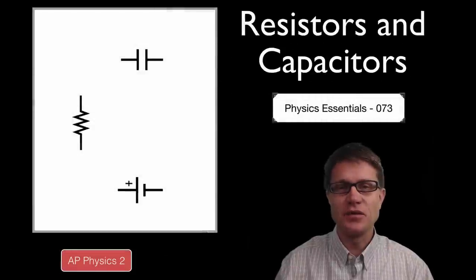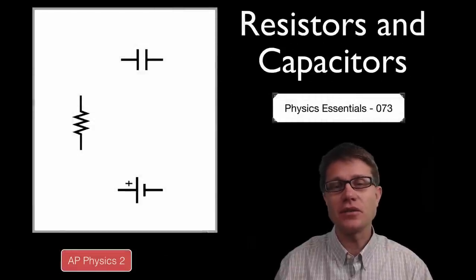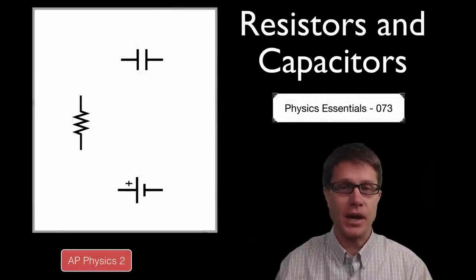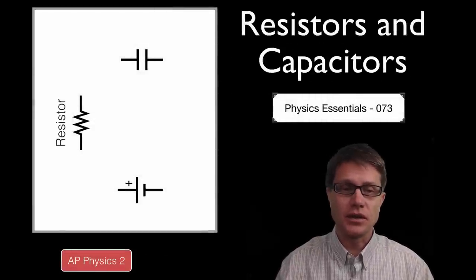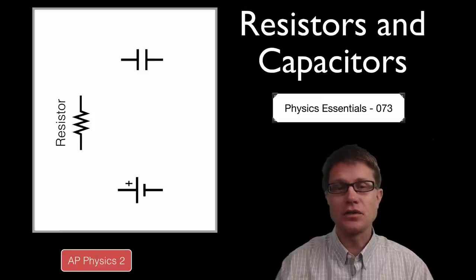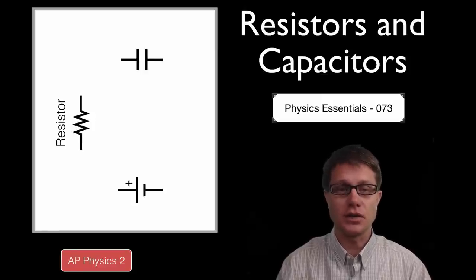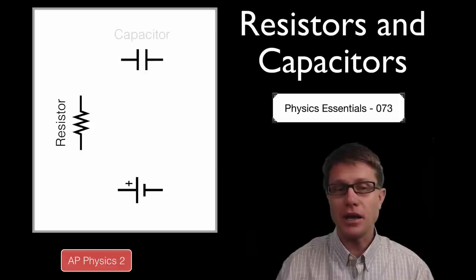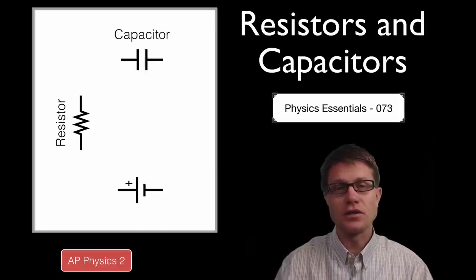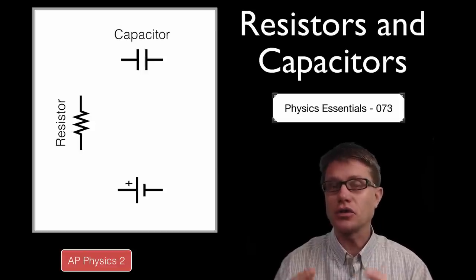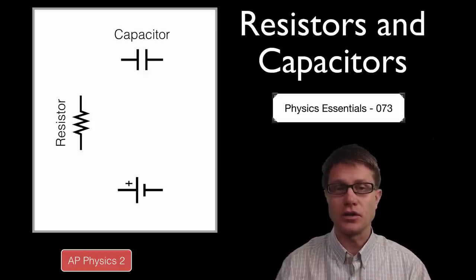Hi, it is Mr. Andersen and this is AP Physics Essentials video 73. It is on resistors and capacitors. A resistor is drawn like this in a circuit diagram, and what it does is it restricts the flow of current in the circuit. A capacitor is drawn like this, and what it does is it stores charge in a circuit.